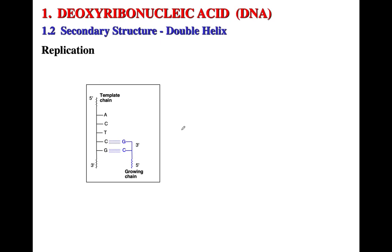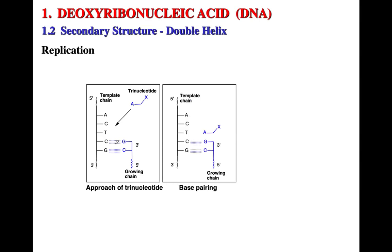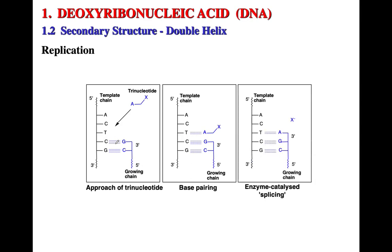Looking at replication at the level of individual nucleotides: you have a growing chain, and since those chains are complementary, the next nucleotide to be added will be A, because A pairs with T. Base pairing takes place via hydrogen-bonding interaction, and then a reaction connects the nucleotides. We will look at the enzyme-catalyzed splicing in detail in the next slides.